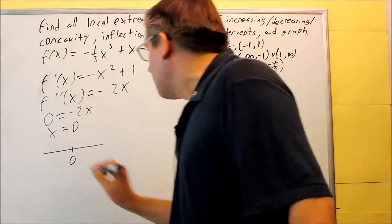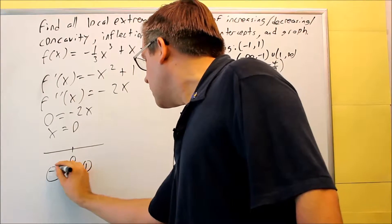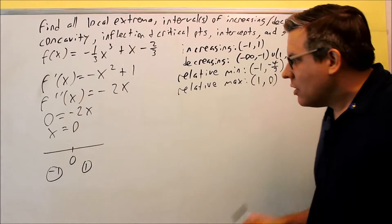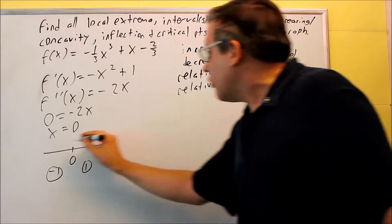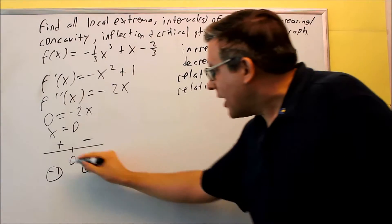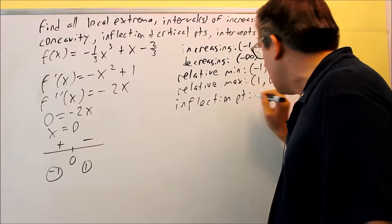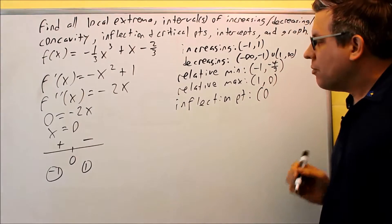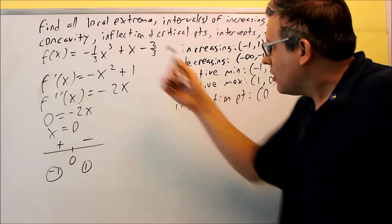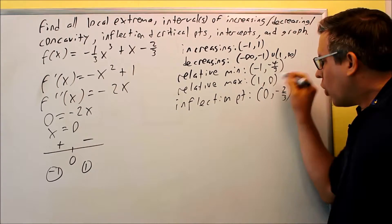We place zero on the number line and test negative 1 and 1 in the second derivative. Negative 1 gives a positive number and 1 gives a negative number, so there is a sign change, which verifies that zero is an inflection point. Plugging zero into the original function gives negative two-thirds, so the inflection point is at 0 comma negative two-thirds — that's our one and only inflection point, and it's another point we can plot later.